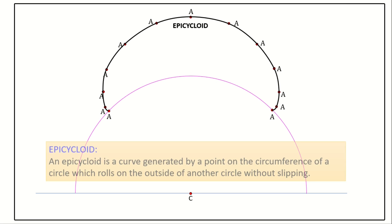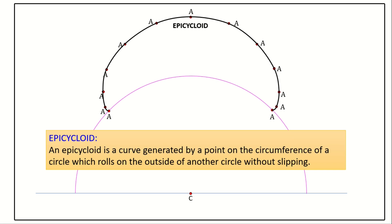So, to summarize the definition: an epicycloid is a curve generated by a point on the circumference of a circle which rolls on the outside of another circle without slipping.